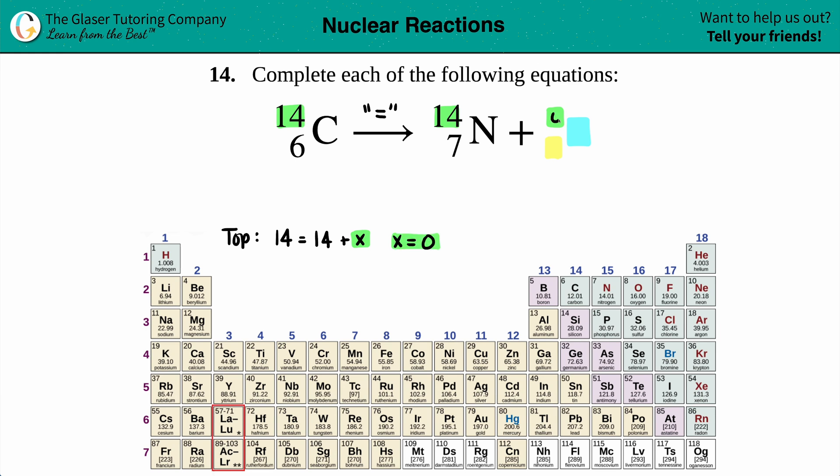Now let's do the same thing for the bottom. All the bottoms on the left have to equal the bottoms on the right. So in this case we have six and this has to equal seven plus a number, right?